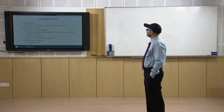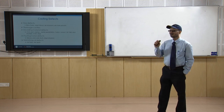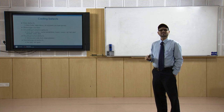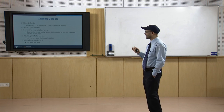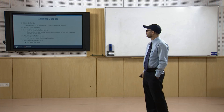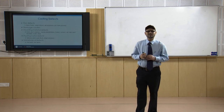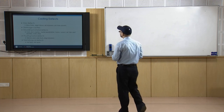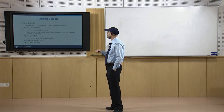Cuts and washes: under this variety of defect, rough surfaces appear on the casting surface because of the cutting or washing away of the moulding material — typically sand — when metal enters the mould. This is because of improper strength or binding of the moulding material. Proper strength, proper use of binders, and a properly baked mould can avoid cuts and washes.